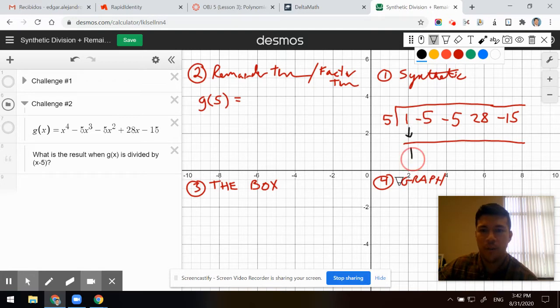Process: carry down your 1, multiply, combine, multiply, multiply and combine, multiply. And I'm going to make my remainder column, combine.